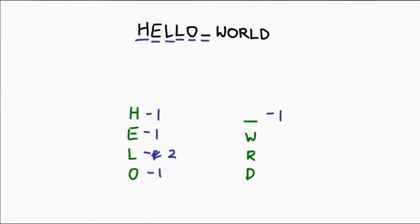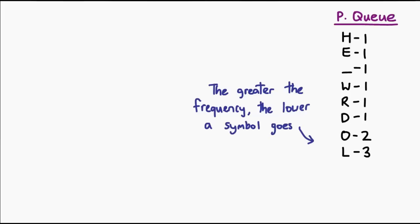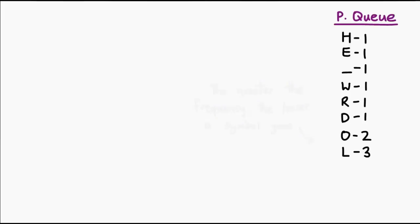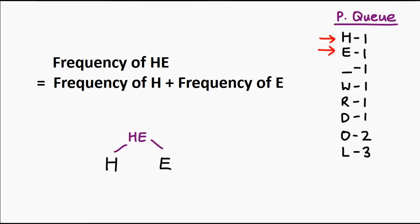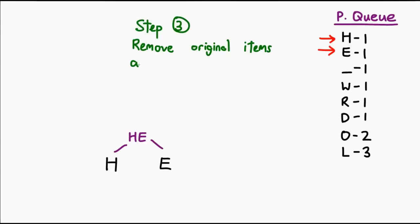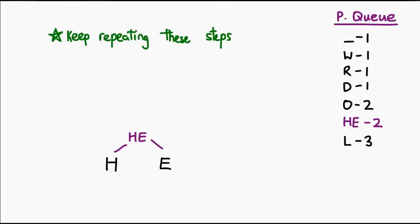This is the "hello world" we've just seen. We calculate the frequency of each symbol and find that most occur just once, but O occurs twice and L occurs three times. Next, put all the symbols into a priority queue — symbols with the lowest frequency appear at the top. From the top of the queue, we pick out the first two symbols and construct a small tree. We end up with a symbol representing both H and E; the frequency of HE is the sum of the frequencies of its child nodes. We insert HE back into the priority queue at the appropriate spot.